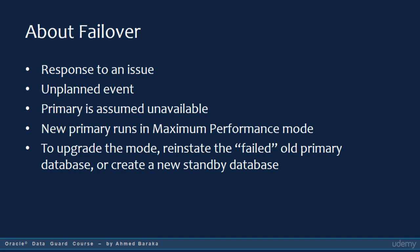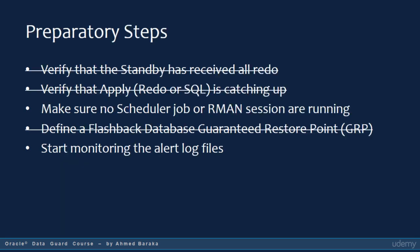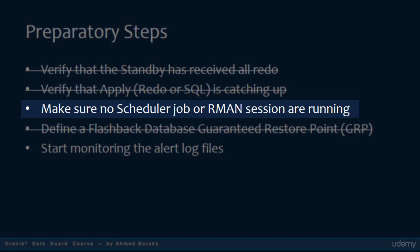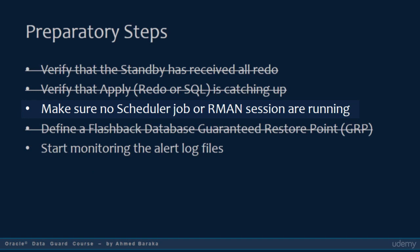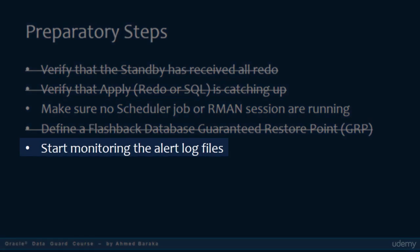To upgrade the mode, you need either to reinstate the failed old primary database, or create a new standby database. In case of failover, the primary database is considered as unavailable, and therefore you don't do most of the preparatory steps that you would do in case of switchover. You only make sure that there is no scheduler job or RMAN session running in the standby database, and you may open a session to monitor the alert log file.